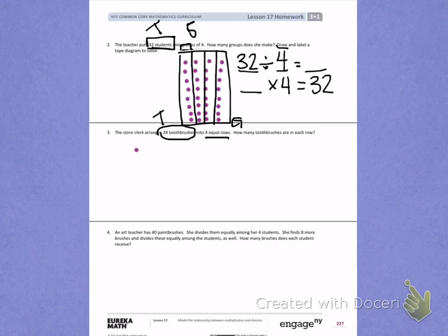I need to figure out how many toothbrushes are in each row. So I will start [counts 1, 2, 3, 4]. There is a row of 4. Then I'm going to continue [5, 6, 7, 8]. Continue this problem, skip counting by 4s, until you get to 24. Then finish the division problem, filling in your unknown information. Finally, see if you can turn those numbers into a multiplication problem.